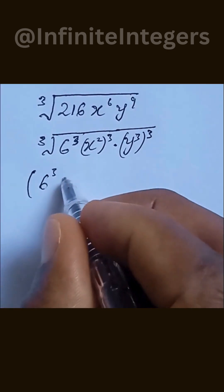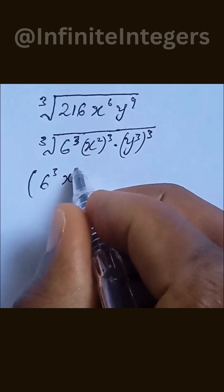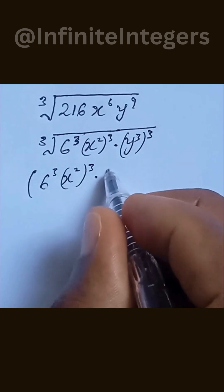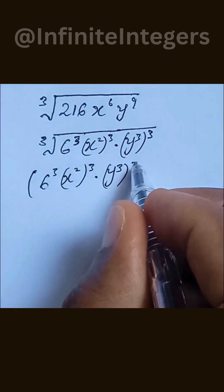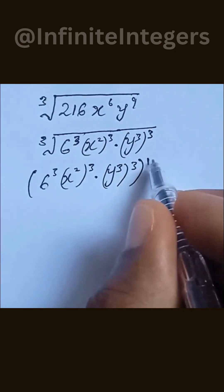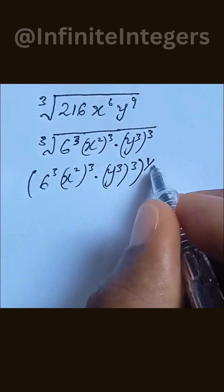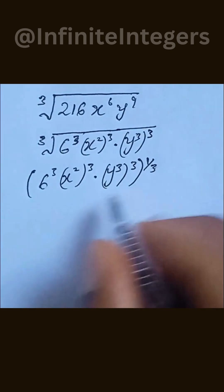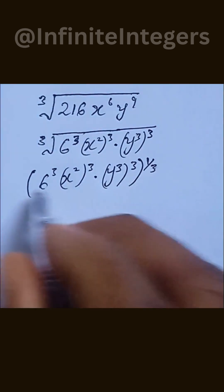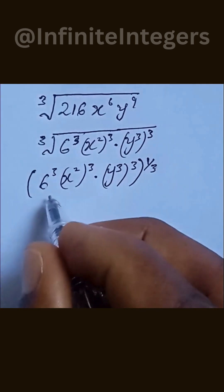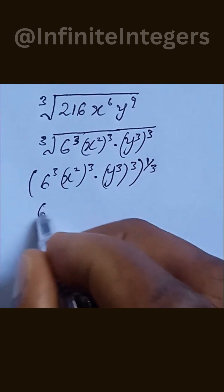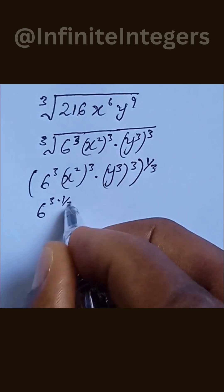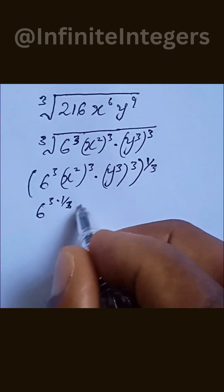We have 6 to the power of 3, then x to the power of 2, to the power of 3, then multiply by y to the power of 3, in brackets, to the power of 3. We have everything to be at the power of 1 over 3. Then we can multiply the powers with what we have in the bracket — this gives us 6 to the power of 3 multiplied by 1 over 3.